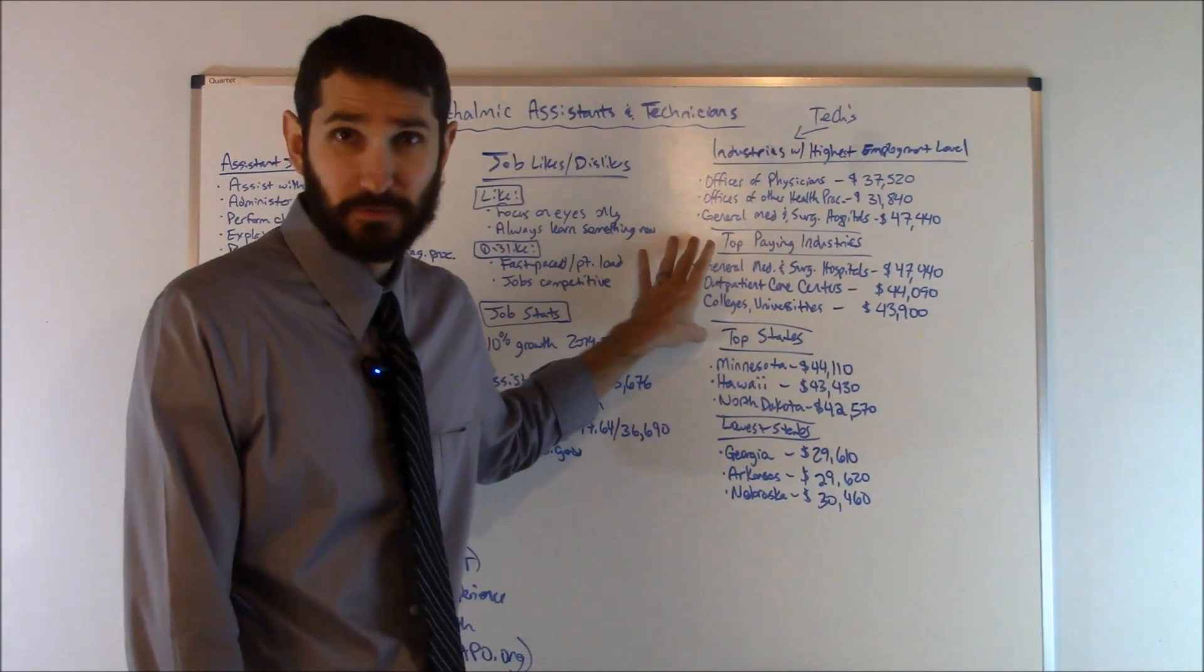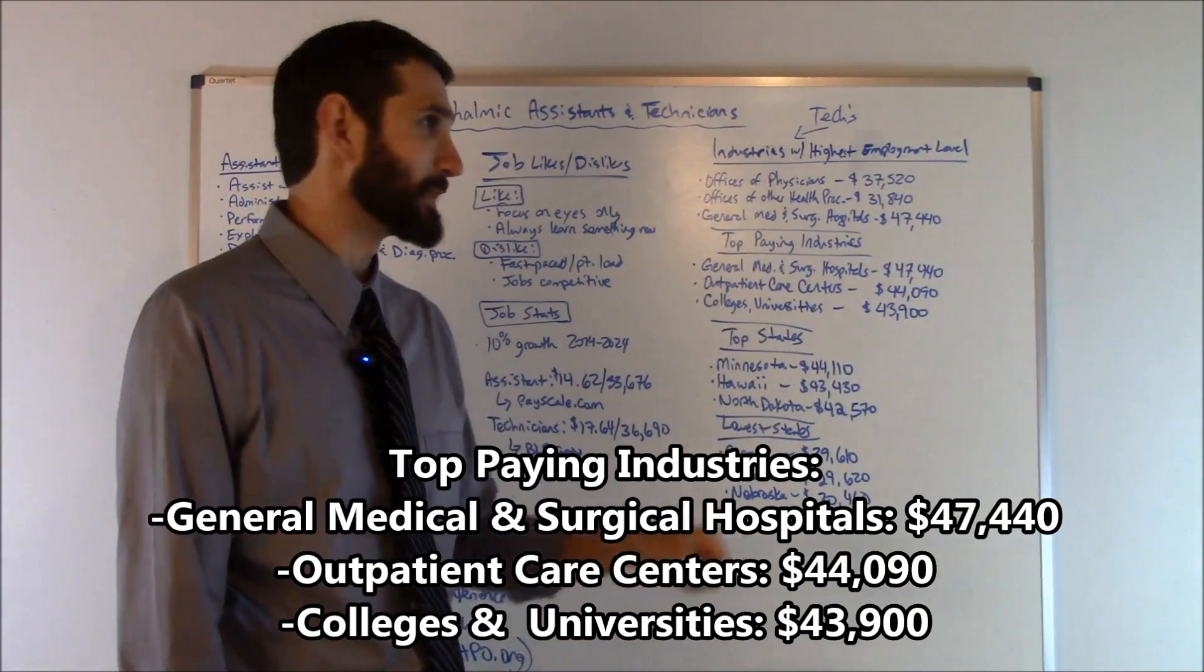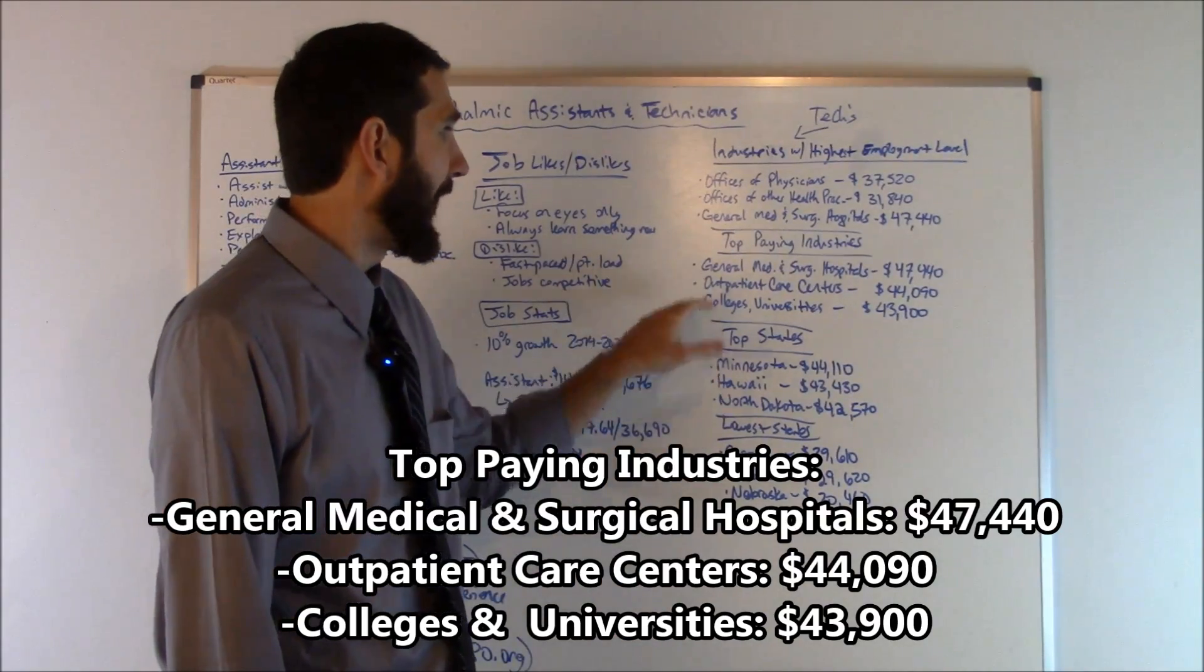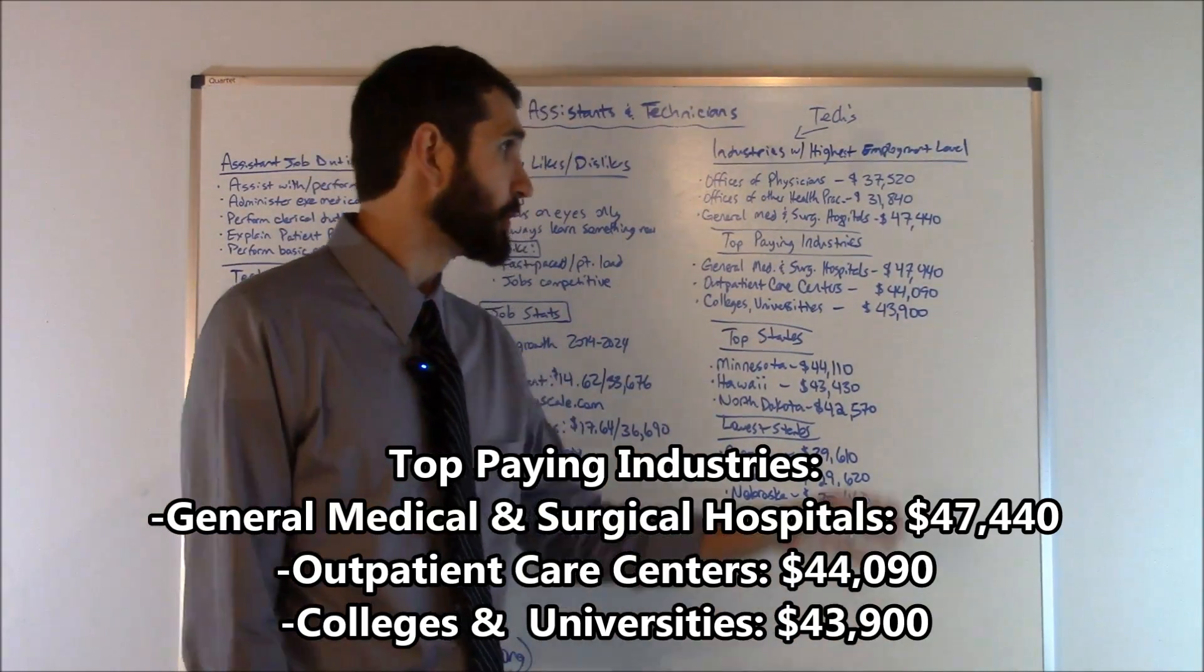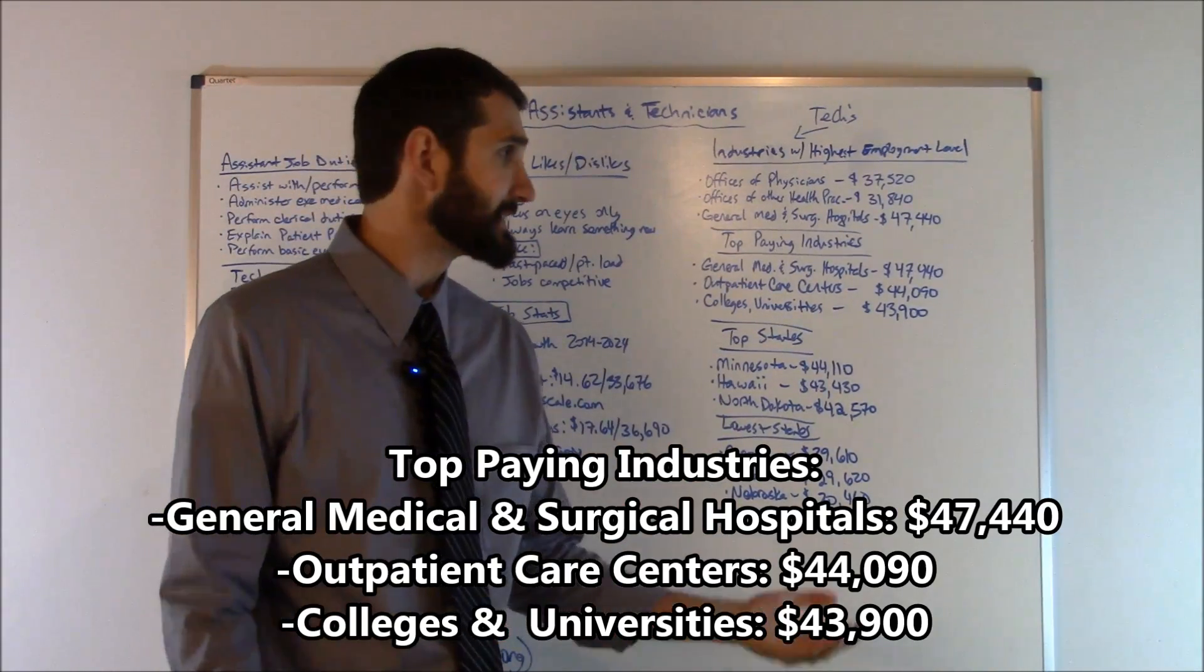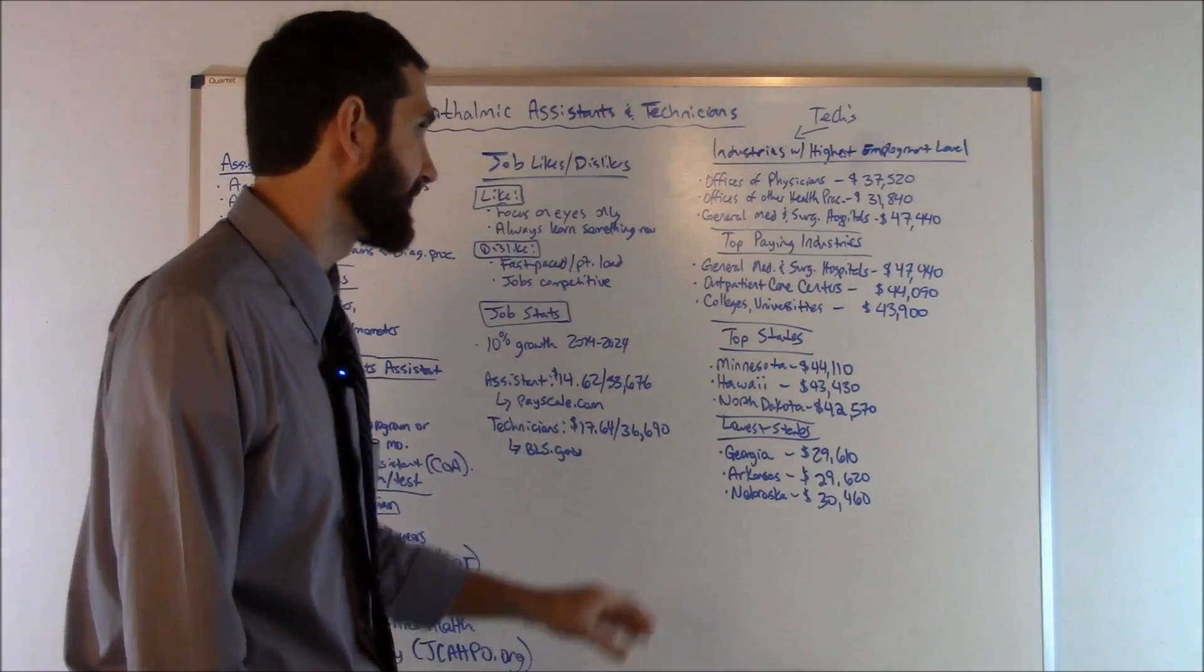Now, which industries paid the most for this profession? General medical and surgical hospitals, $47,440 was the average. Outpatient care centers came in at number two at $44,090. And then colleges and universities came in at number three, $43,900 was the average salary there.